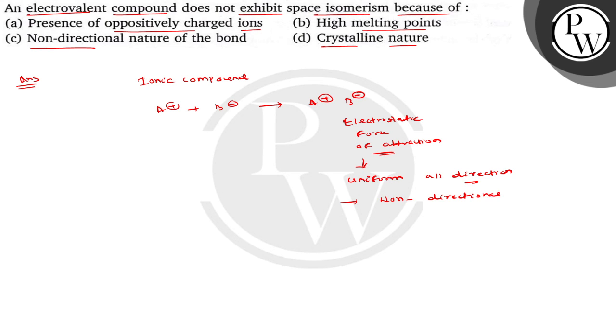So, in ionic compounds, the electrovalent bonds are non-directional in nature, and therefore they do not exhibit space isomerism. So the correct option is C. I hope you understood well. Best of luck.